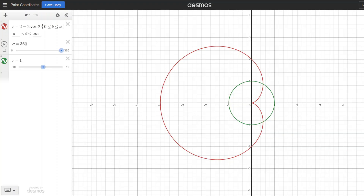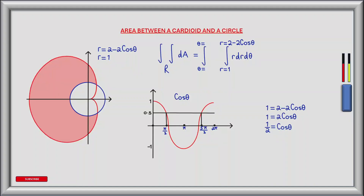The region we are interested in is between the points at which the cardioid and the circle intersect. To manually determine the limits of theta we need to find the values of theta when the circle and cardioid intersect, which occurs when the equation of the circle equals the equation of the cardioid — that is, when the r values are equal. Setting one equation equal to the other we have 1 equals 2 minus 2 cos theta. Rearranging gives 1 equals 2 cos theta, and dividing both sides by 2 we get 1 half equals cos theta. Looking at a graph of cos theta, we ask at what values of theta is cos theta equal to 1 half.